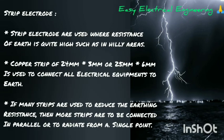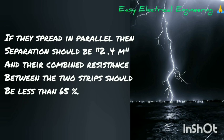The third type is strip electrode. Strip electrodes are used where the resistance of the earth is quite high, such as in hilly areas. Copper strip of 24 mm x 3 mm or 25 mm x 6 mm is used to connect all electrical equipment to the earth. If many strips are used to reduce the earthing resistance, more strips are to be connected in parallel or to radiate from a single point. If they are spread in parallel, the separation should be 2.4 meters and their combined resistance between the two strips should be less than 65%.